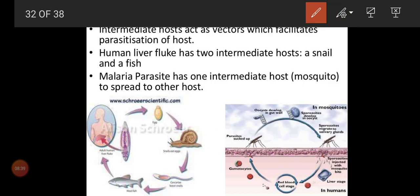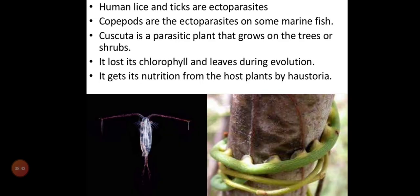Ectoparasites live outside the body and endoparasites live inside the body. Human lice and ticks are ectoparasites — lice live on our head and ticks on the body. Copepods are ectoparasites of some marine fish, living on the outer surface. Cuscuta is a parasitic plant that grows on trees or shrubs. Cuscuta has no roots or leaves — its stem is yellowish-green because it has lost the ability to photosynthesize, so it does not produce its own food.